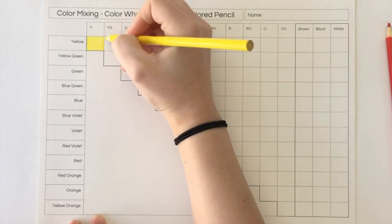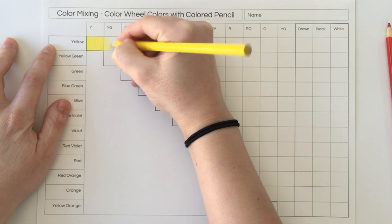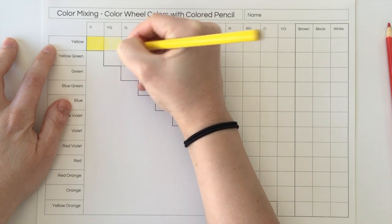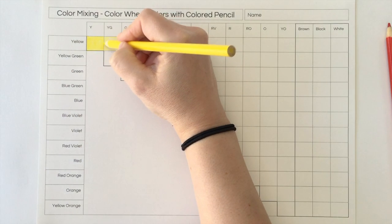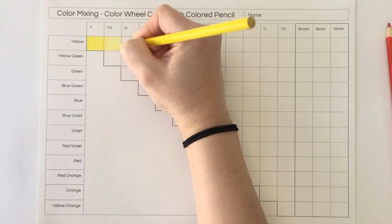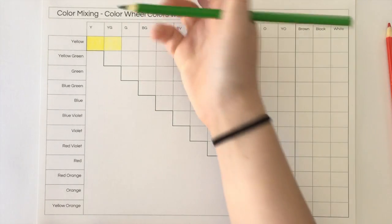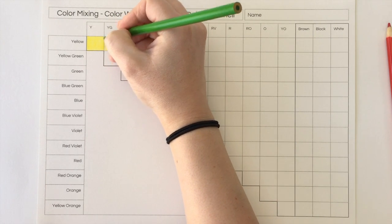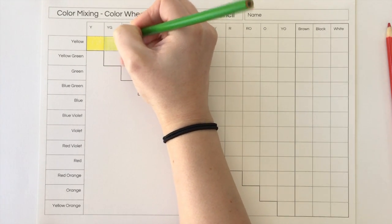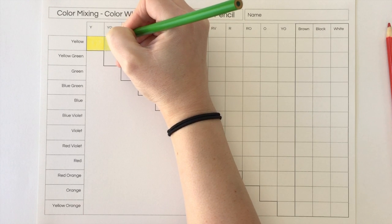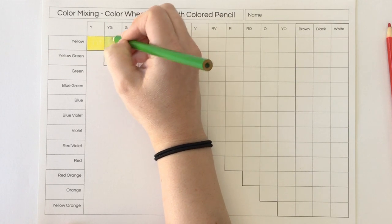All right, so next is actually mixing the colors together. So yellow and yellow-green, I'm going to start out with yellow. And again, you're trying to make it even and then I'm going to add yellow-green on top of that. And I always start with less because you can always add more and you can always get darker, but you can't really erase colored pencil if you make it too dark or you mess up.